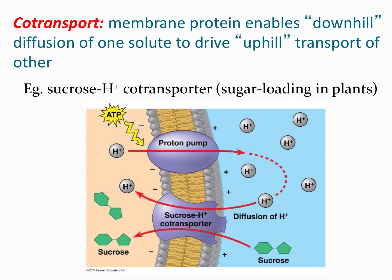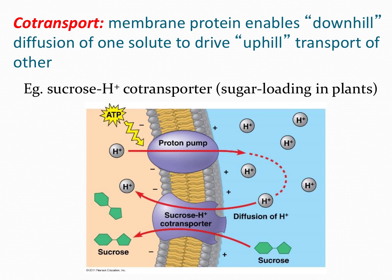Another thing that happens is co-transport, where membrane proteins work together to create an uphill and downhill path for solute particles to move. The example here shows the proton pump working with sucrose transportation. The proton pump actively pumps out H+ ions against the gradient, then as the H+ ions come back in, the sucrose hitches a ride. Co-transport is where a particle hitches a ride on the movement of another particle — it helps with cell efficiency and makes movement more efficient.